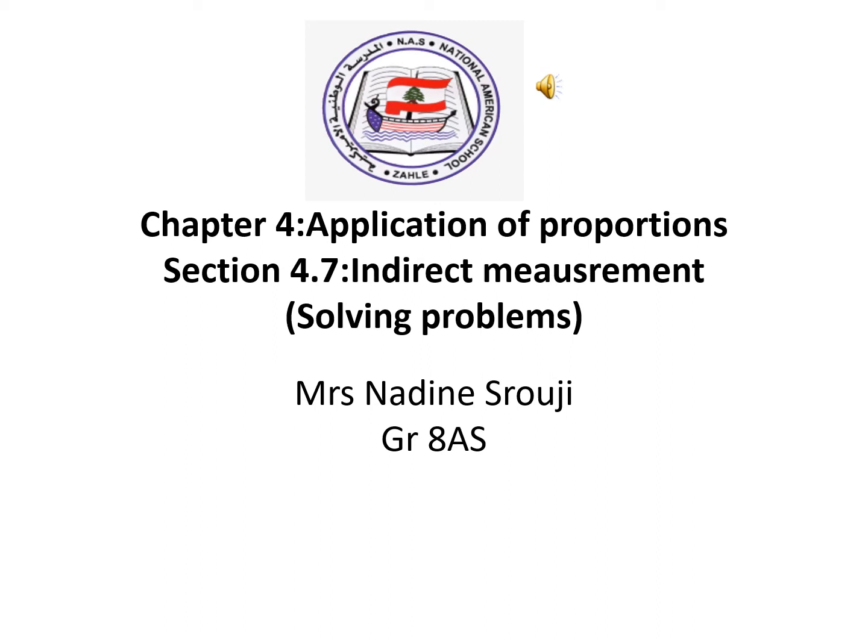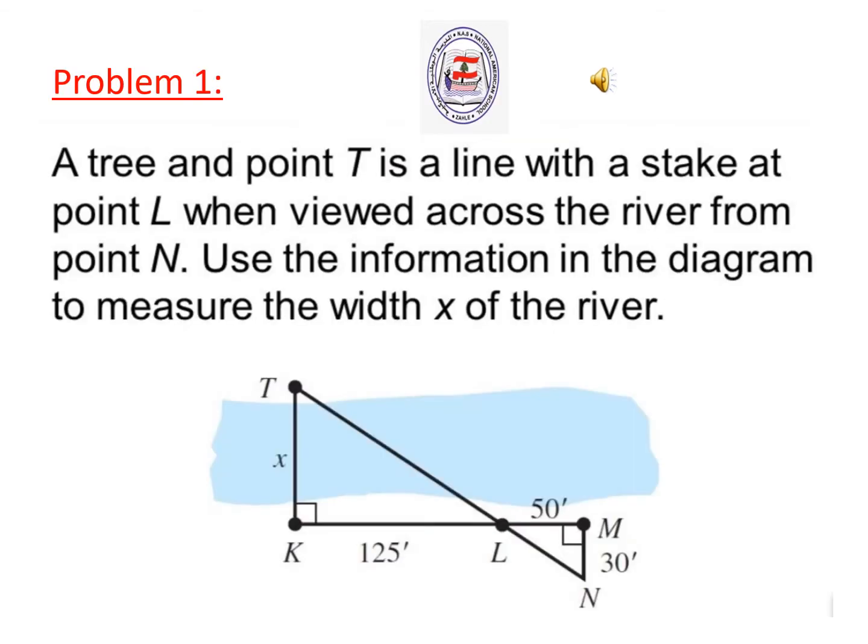Good morning grade 8 students, this is Miss Nadine. Today I'm going to solve some problems about indirect measurements. Problem 1: A tree and point T is a line with the stake at point L when viewed across the river from point N. Use the information in the diagram to measure the width x of the river.